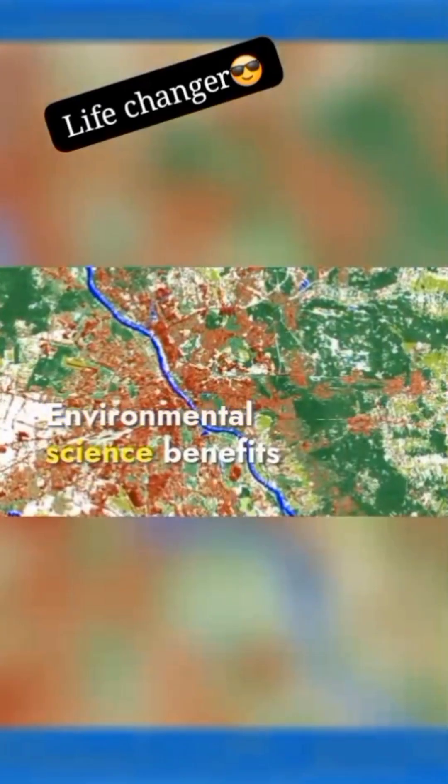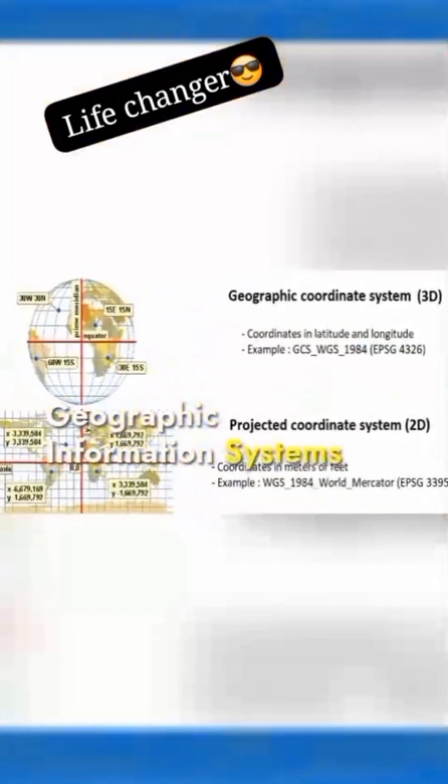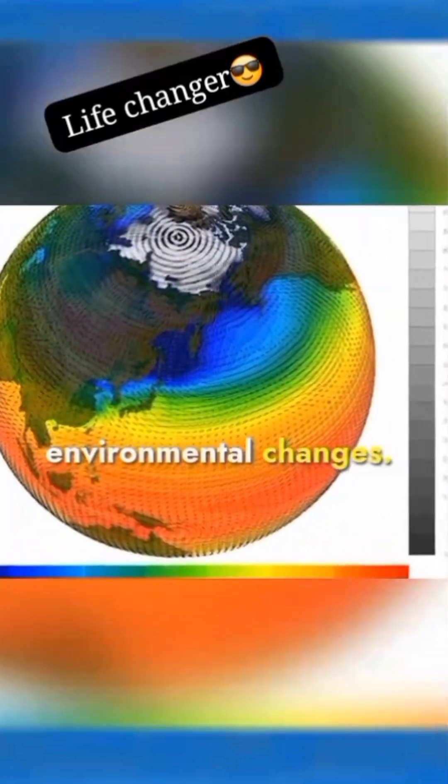Environmental science benefits from remote sensing technologies and sensors to monitor conditions. Geographic information systems visualize data, while climate models predict environmental changes.